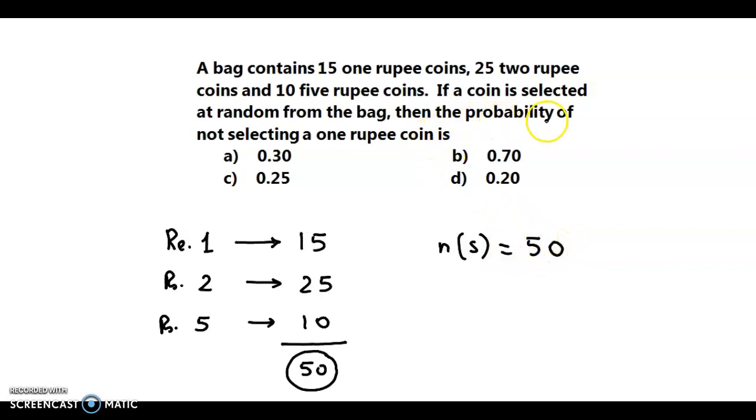We have to find the probability of not selecting a one rupee coin. So we have to make the selection from these two. That is, it could be a two rupee coin or it could be a five rupee coin.